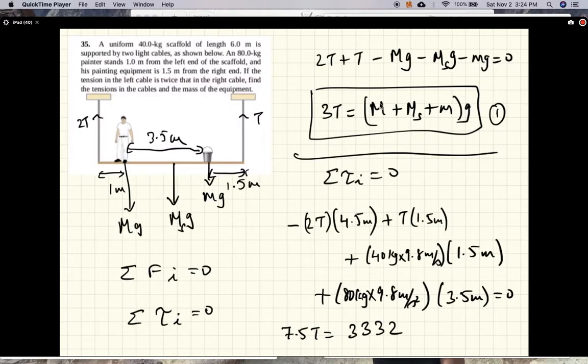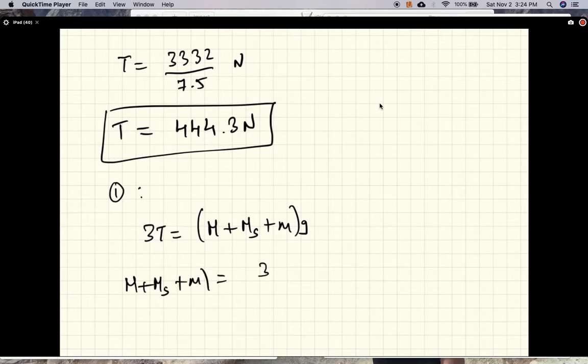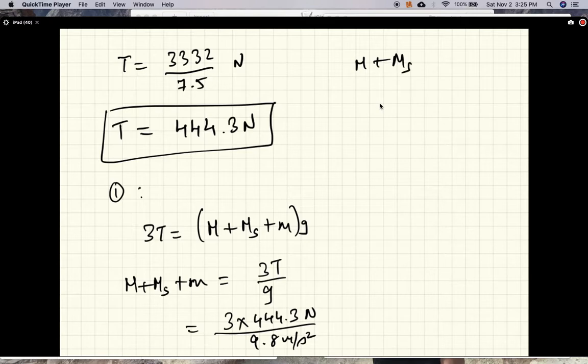Okay now for part B to find the mass, now we could use this equation, now that we know the tension we can find the mass using that equation. So we have equation one tells us 3T is equal to mass of the person plus mass of the scaffold plus mass of the bucket times g. So the sum of the masses is 3T divided by g, which is three times 444.3 newtons divided by nine point eight meters per second squared.